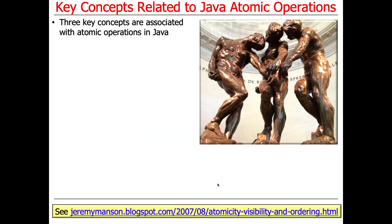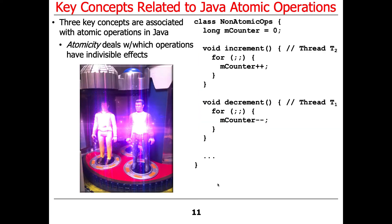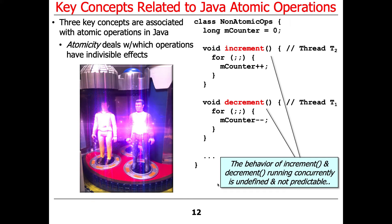There are three key concepts associated with atomic operations in Java. The first is atomicity, which relates to the fact that you want operations to have indivisible effects. Here we have a simple example that is not atomic — a couple of threads trying to increment a counter. One thread loops incrementing the counter (the shared mutable state), and the other thread decrements the counter. Because that shared state is not protected by any synchronizer or atomic operation, chaos and insanity will ensue — we have no idea what the value of the counter will be.